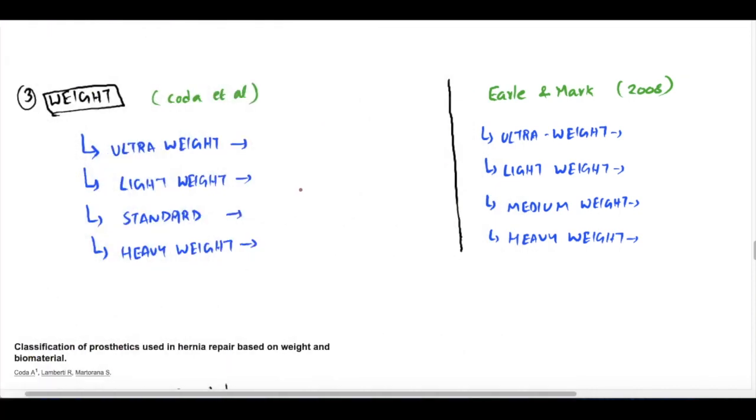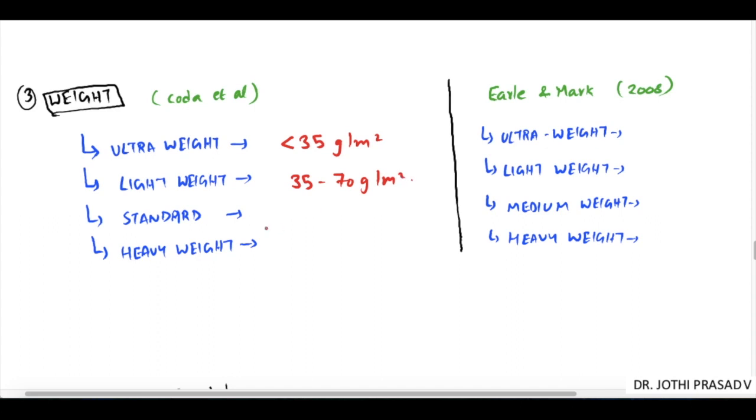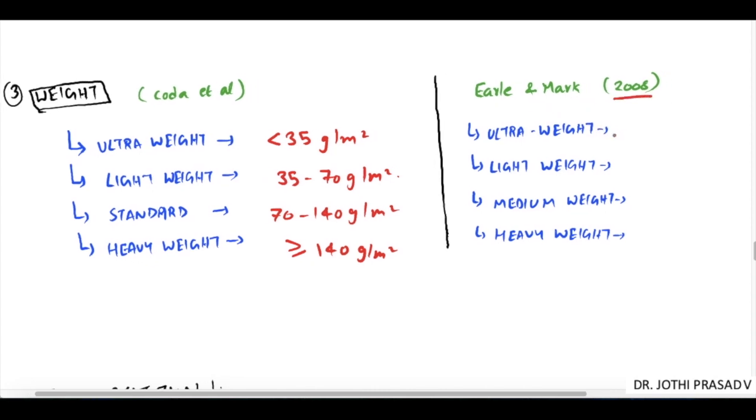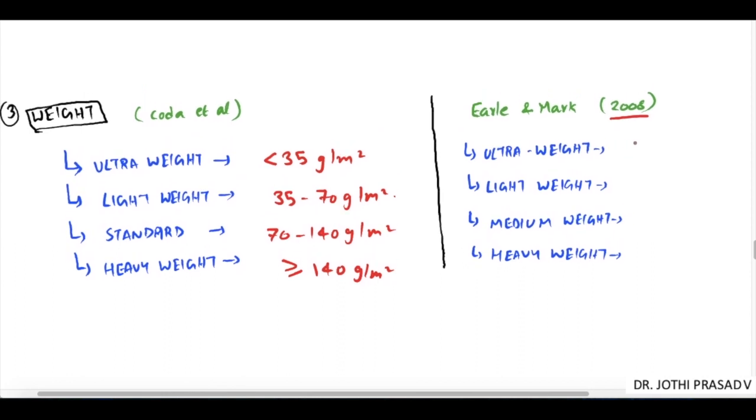Based on weight, Koda et al classified meshes into four categories: ultra-lightweight less than 35 grams per meter square, lightweight 35 to 70 grams per meter square, standard 70 to 140 grams per meter square, and heavyweight greater than or equal to 140 grams per meter square. Another classification was proposed by Erlen Mark in 2008: ultra-weight less than 35, lightweight 35 to 50, medium weight 51 to 90, and heavyweight greater than 90 grams per meter square.